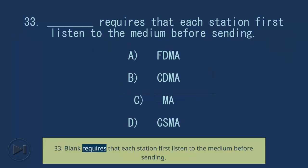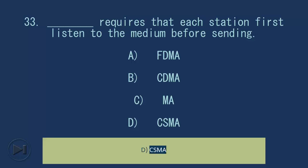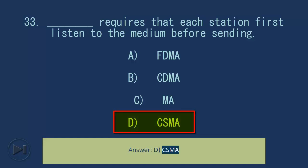Question 33: Blank requires that each station first listen to the medium before sending. A) FDMA, B) CDMA, C) MA, D) CSMA. Answer: D) CSMA.